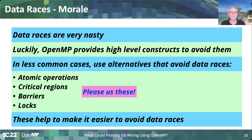The moral here is that data races are very nasty and ugly. Luckily OpenMP has support to help you avoid them. When it's not as easy as a reduction, there are constructs that help: atomic operations, critical regions, barriers, and locks. They're all there to help you avoid data races. Please use them — take a look at the specifications and use them where you can. They'll definitely make your life a lot easier.